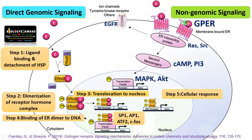In non-genomic signaling, estrogen receptor variants or GPER are present on the cell surface or plasma membrane. Estrogen binds to this receptor causing a conformational change, or it can interact with other receptors on the plasma membrane, activating signaling molecules like RAS and SRC. This leads to formation of second messengers like cAMP, activating protein kinase A or MAP kinase, phosphorylating many downstream proteins, and finally phosphorylating a transcription factor that induces transcription of associated genes leading to a cellular response.